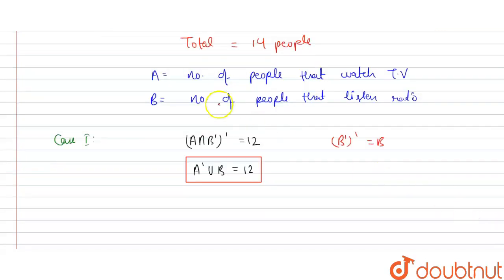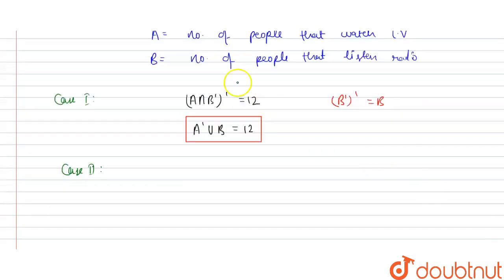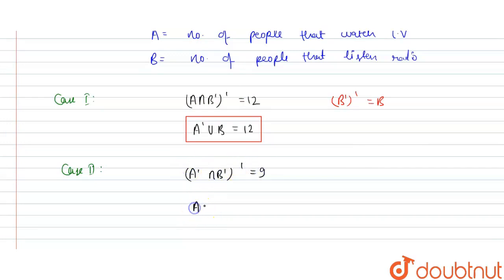In Case 2, the given expression is (A complement intersection B complement) whole complement equals 9. After solving, A complement complement union B equals A union B equals 9. So N(A union B) = 9. This is our second case.